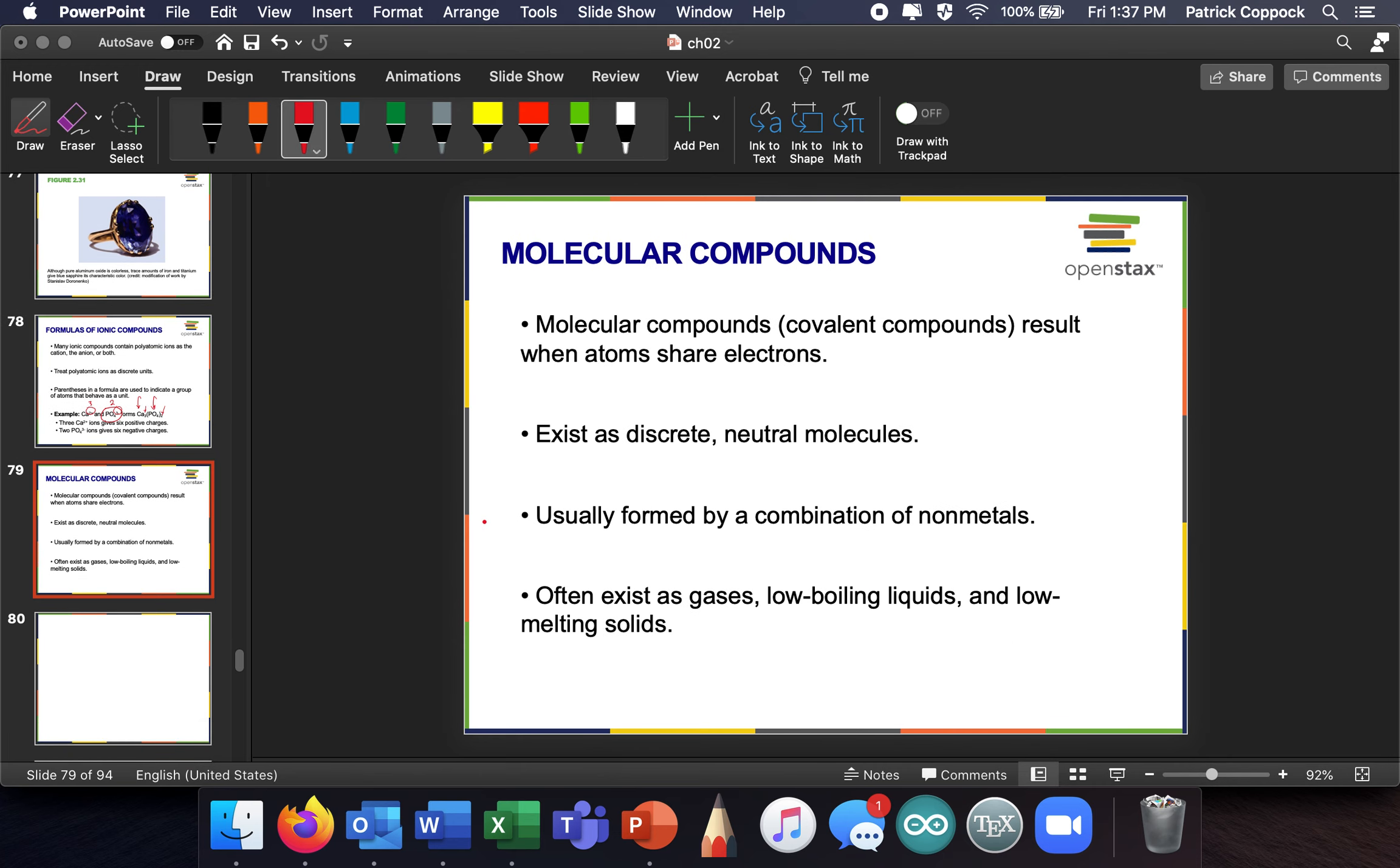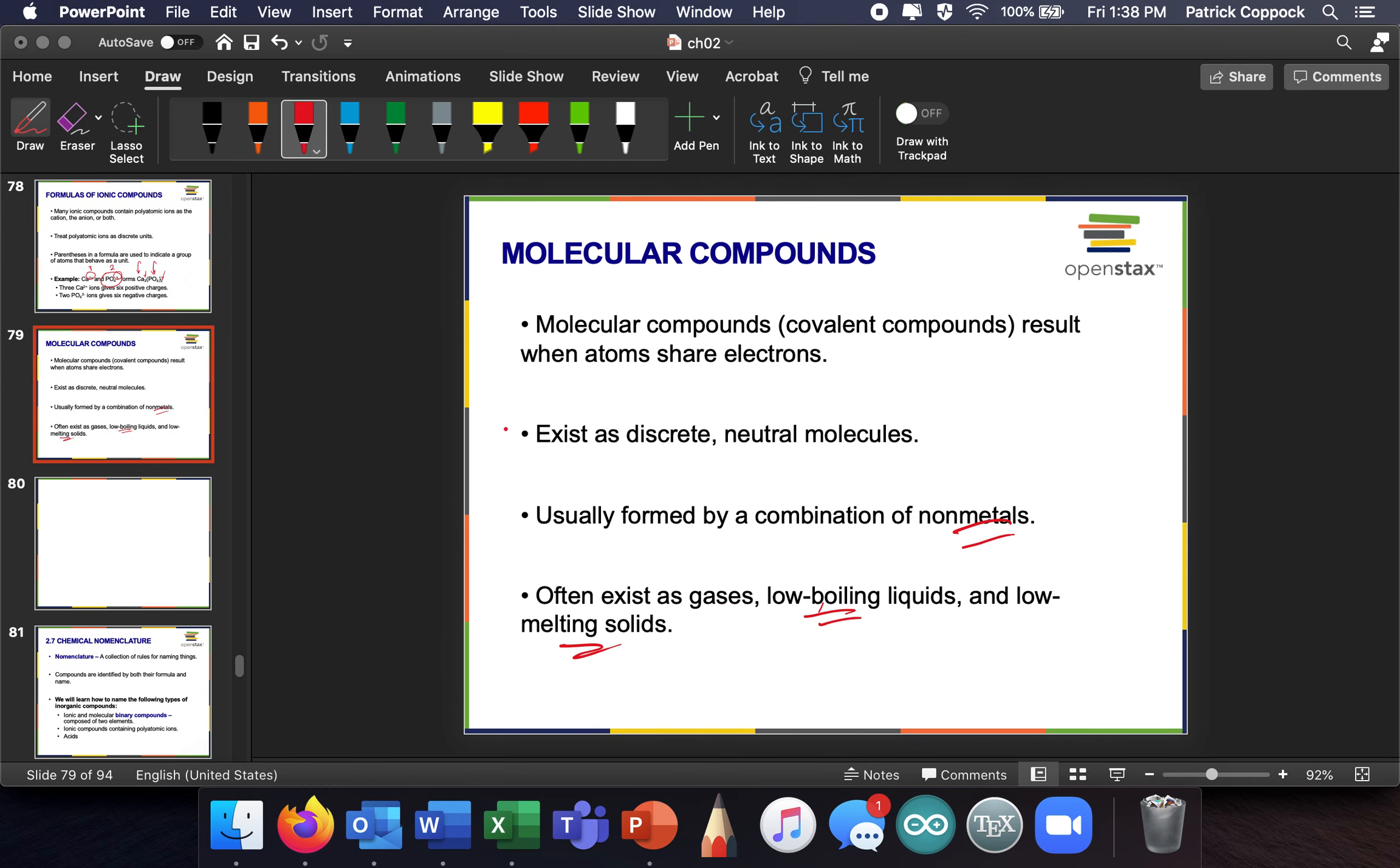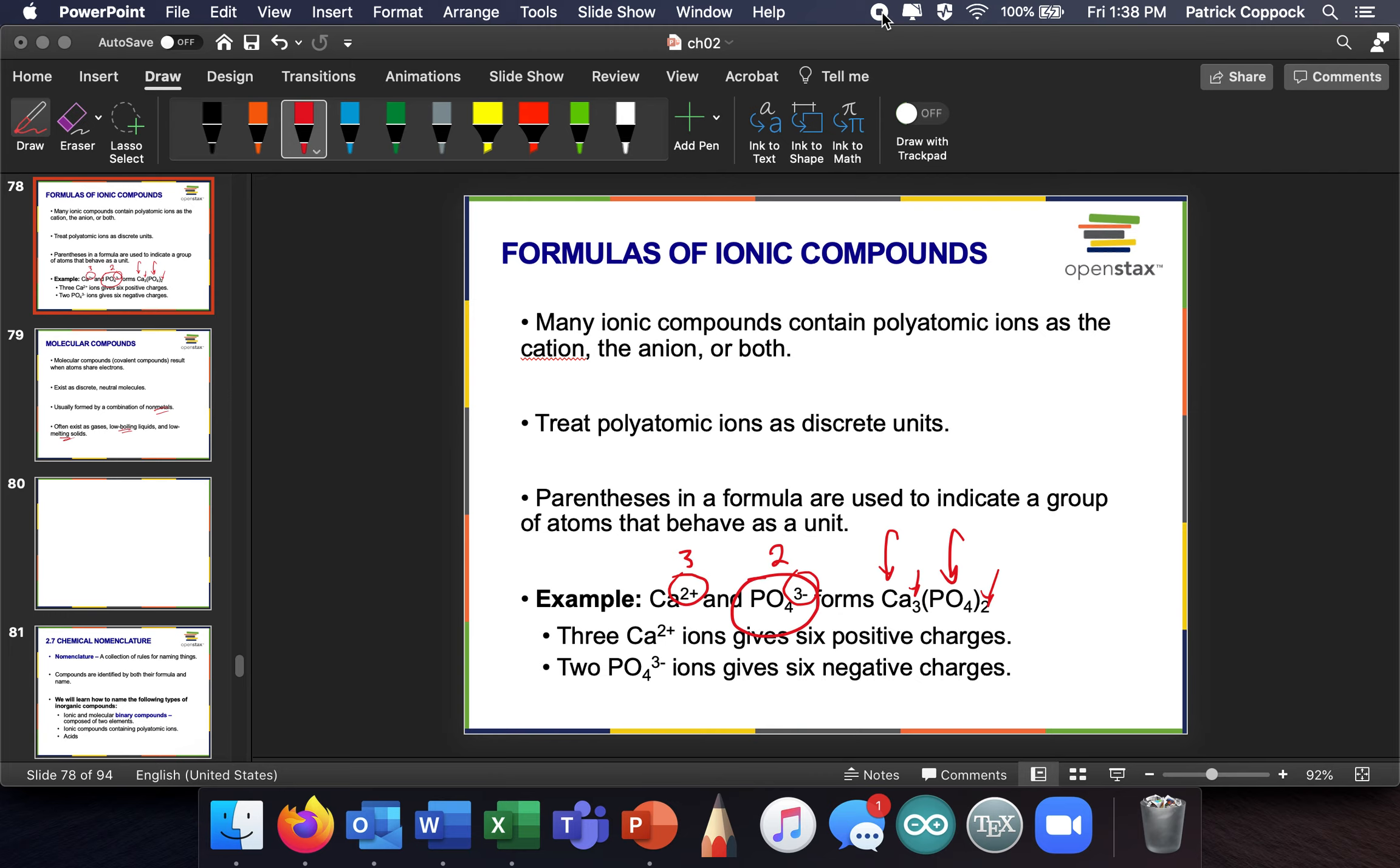Now, molecular compounds are much simpler. Molecular compounds result when atoms share electrons. They exist as discrete neutral molecules. And they're formed by the combination of nonmetals. And they often exist as gases, low boiling liquids, or low melting solids. So the melting point of molecular compounds, I realize I'm not saying a whole lot about this. Ionic is much more interesting for this topic, but because these are so simple. They're, there's no metals in them and they have low melting points, low boiling points, and they often exist as gases. And so in the next section, we are going to name them and that's going to be a beast. So hold on to your hats.